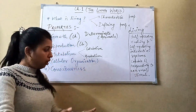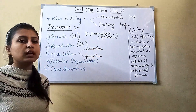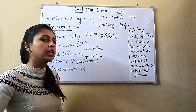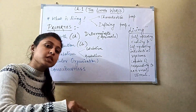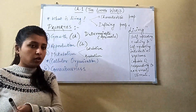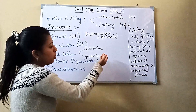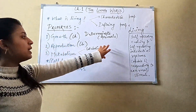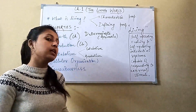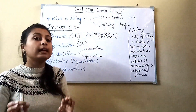Anabolism is construction — simpler molecules are used to build larger complex molecules. An example of catabolism is respiration, where glucose is broken down to yield energy. An example of anabolism is photosynthesis in plants, where simple units are used to make glucose in the presence of sunlight and chlorophyll. Metabolic reactions are never seen in non-living things, so metabolism is a defining property of living organisms, not just a characteristic property.